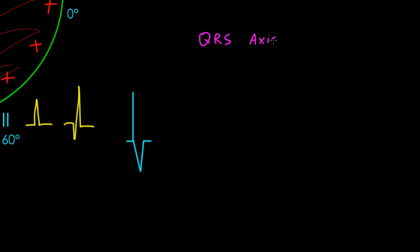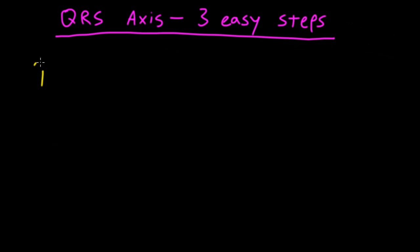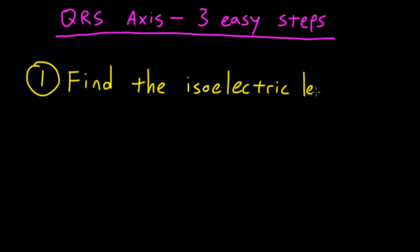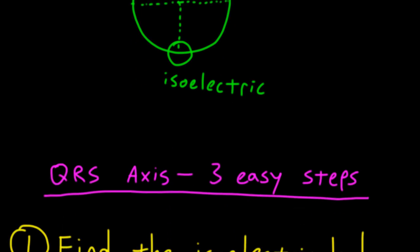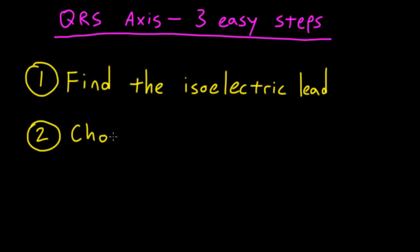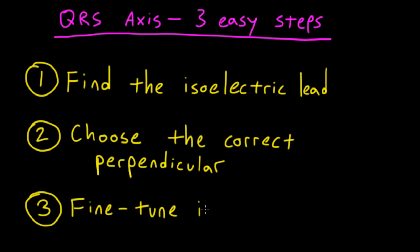Putting it all together, the easiest way to figure out the axis is to go through three steps. The most important one to remember is step one: find the isoelectric lead. We determine the QRS axis by looking at the limb leads. The isoelectric lead tells us the axis points 90 degrees away from it — either 90 degrees in one direction or 90 degrees in the other. Step two is choose the correct perpendicular. Step three is look back at your isoelectric lead to fine-tune it.